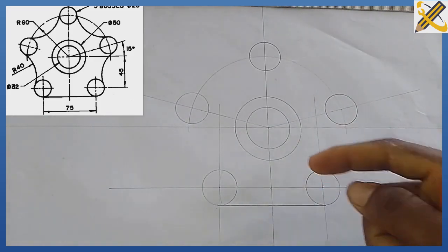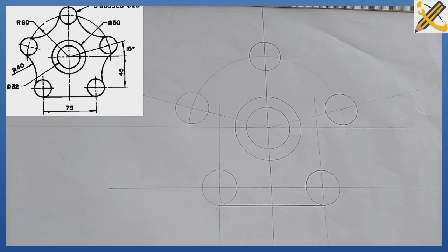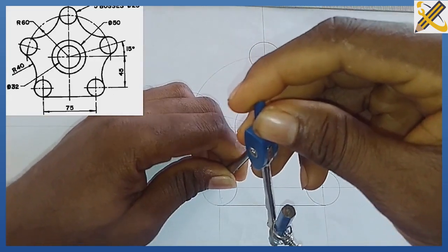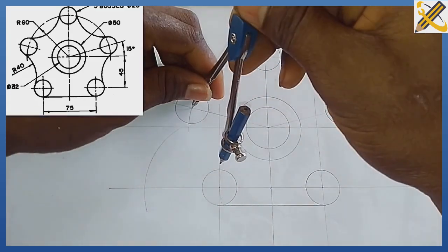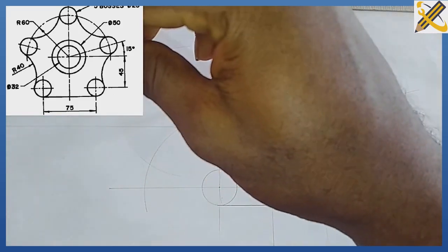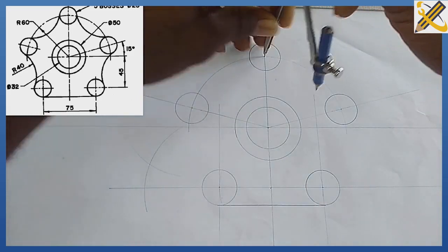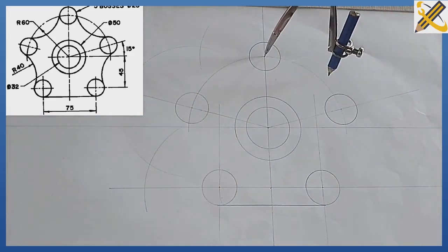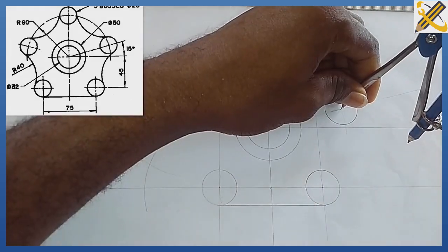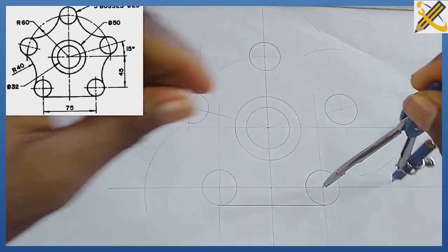The radius of our arc is 40 and the radius of our circles is 12.5, so 40 plus 12.5 equals 52.5. With your compass measure radius 52.5. I place my compass and strike my first arc, then my second arc, repeating this at each circle position.